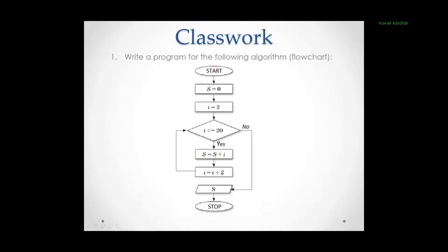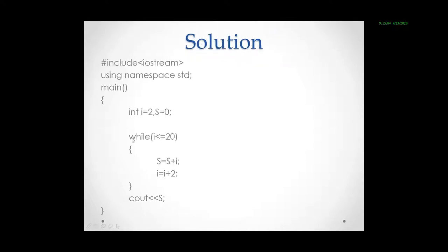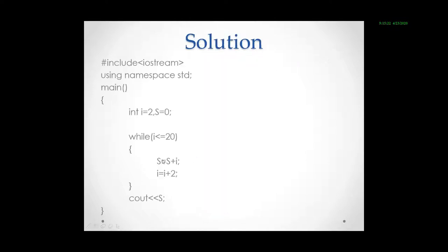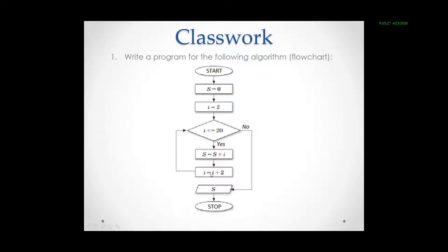Then in the flowchart it starts to check if i is less than or equal to 20. So this is a cycle. So same thing I have written here. I have written in while cycle. So i is less than or equal to 20. Inside the cycle here it is written s is equal to s plus i. So same thing I have written here. And then i is equal to i plus 2. So incrementing i by 2.